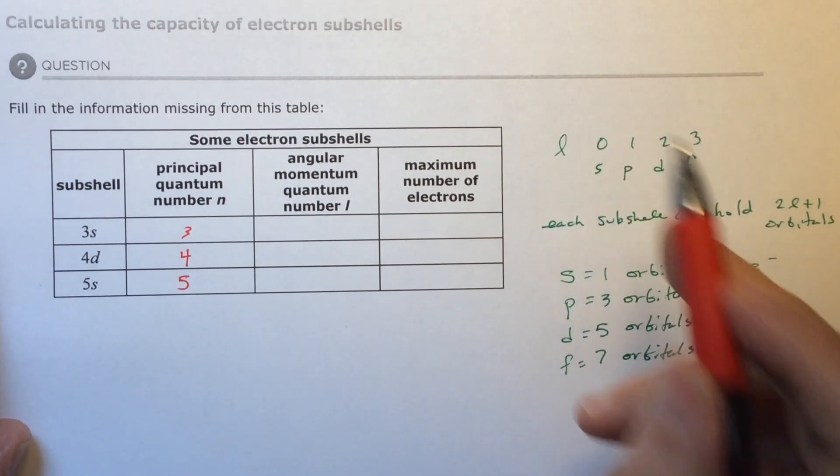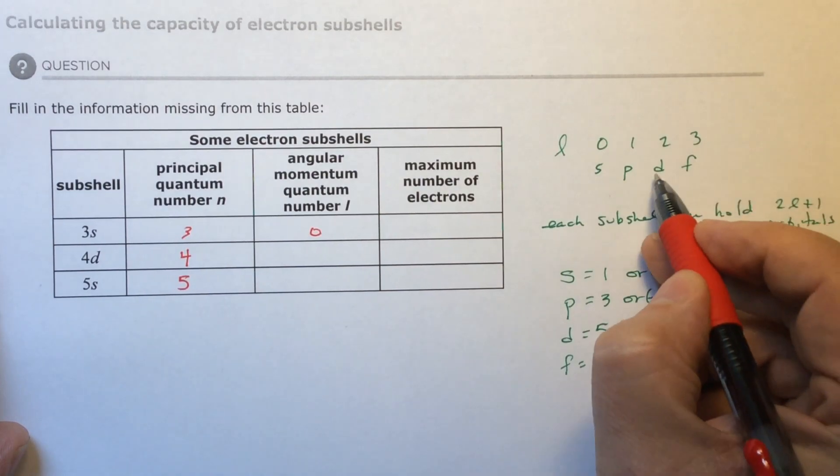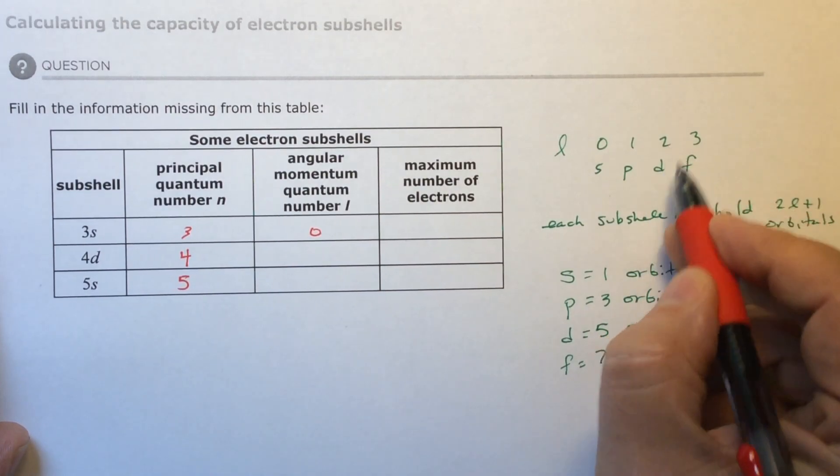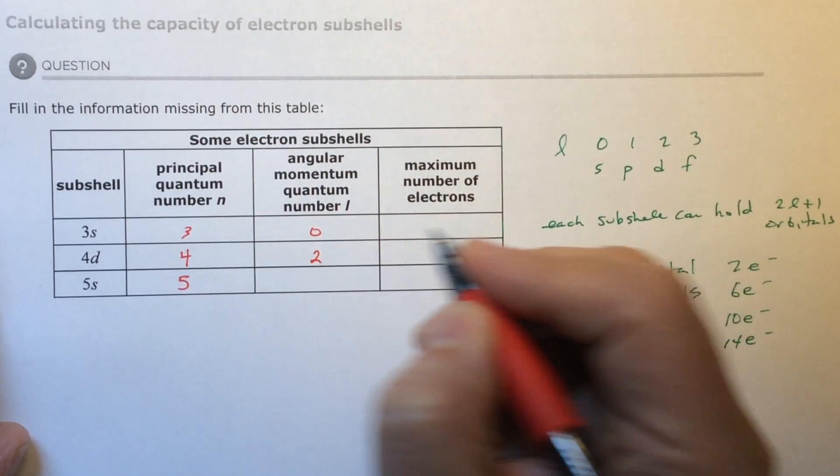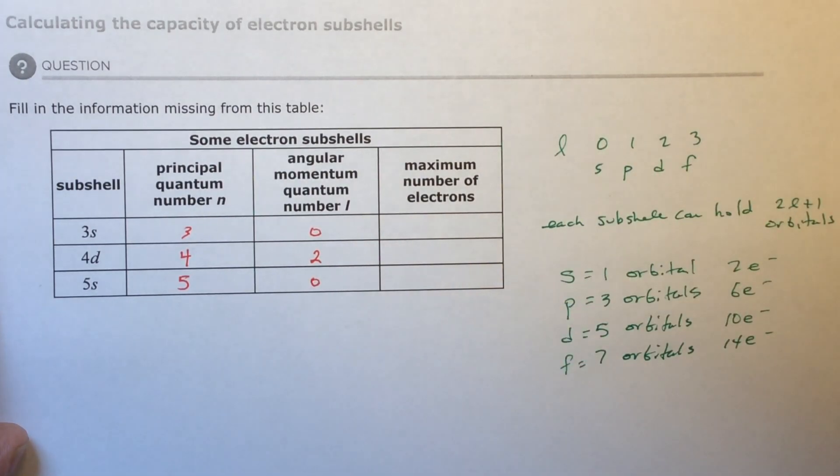S is going to be an L number of zero. Four D is going to be an L number of two. And five S is also going to be zero.